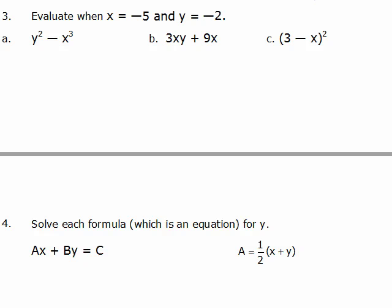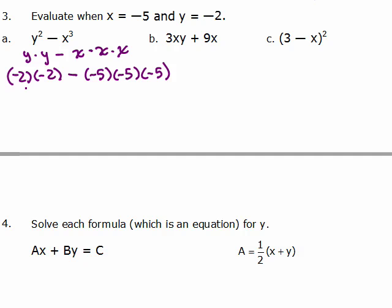Number 3: evaluate when x equals negative 5 and y equals negative 2. I like to write y squared as y times y and x cubed as x times x times x, then plug in the values. So y is negative 2: negative 2 times negative 2, minus x is negative 5: negative 5 times negative 5 times negative 5. Doing the multiplication first gives 4, and three negatives multiplied give a negative, with 5 times 5 times 5 being 125. So 4 minus negative 125 is 4 plus 125, which is 129.